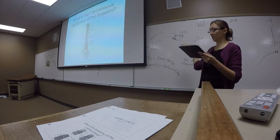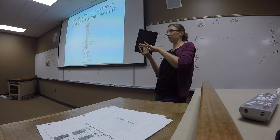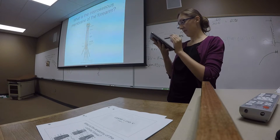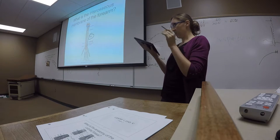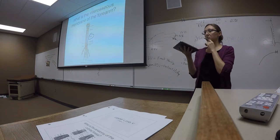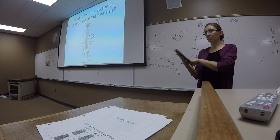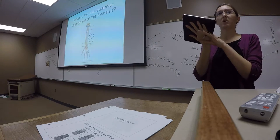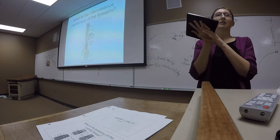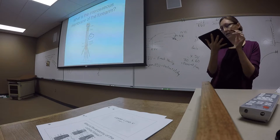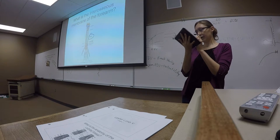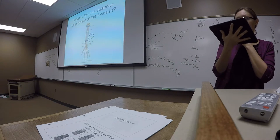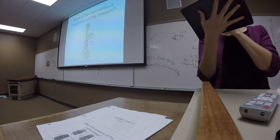Just as we had an interosseous membrane of the leg, the same applies to the forearm with the radius and ulna. In between them we have our interosseous membrane, which helps to stabilize the position of the two bones relative to each other, forming a syndesmosis joint. Like the leg, we also have apertures in the interosseous membrane to allow for vasculature and nerves to run between the anterior and posterior compartments.